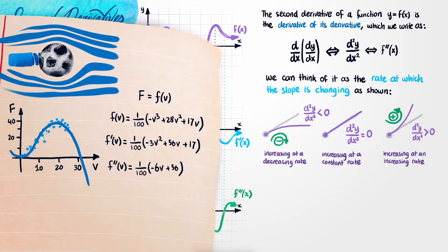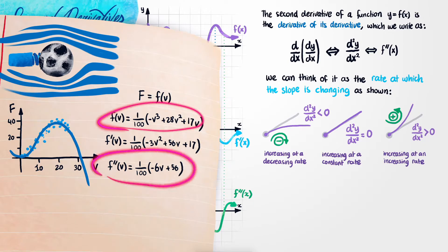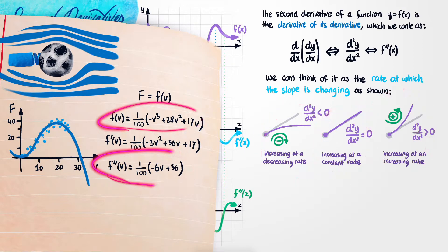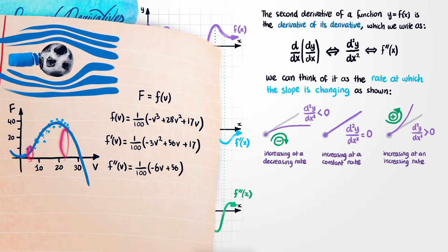The second derivative of this function f(v) is just equal to this function right here. And now we'd like to see if it actually matches up with our intuitions that we built up. To do this, I'm going to go ahead and pick two points on our graph that we can use to compare our different values. We'd like to compare the second derivatives at v equals 5 and v equals 25.